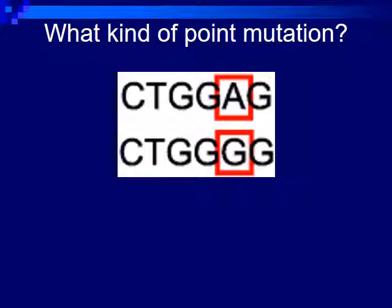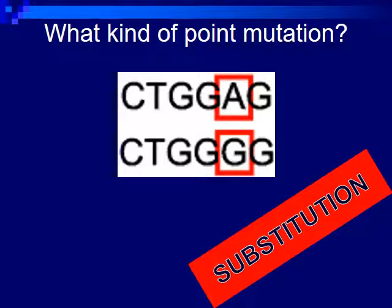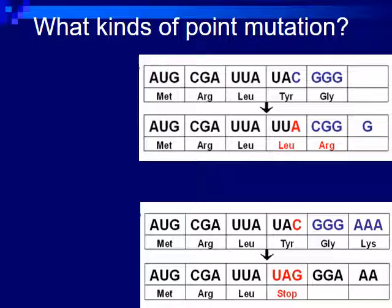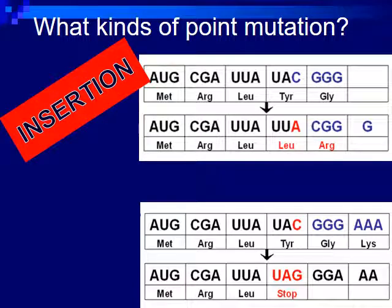In a DNA sequence example: we originally had CTGGAG, and afterwards we had CTGGGG — the A was swapped out for G. This would be an example of a substitution. Here, we originally had AUG, CGA, UUU, UAC, GGG. After the mutation, the base adenine was inserted, shifting everything down — we can see AUG, CGA, UU, UA, UU, UA, CGG, G. In another example, we originally had AUG, CGA, UU, UA, UAC, GGG, AAA, and the C was removed, meaning everything shifted one place. Since everything shifted to the left, we know this is a deletion.